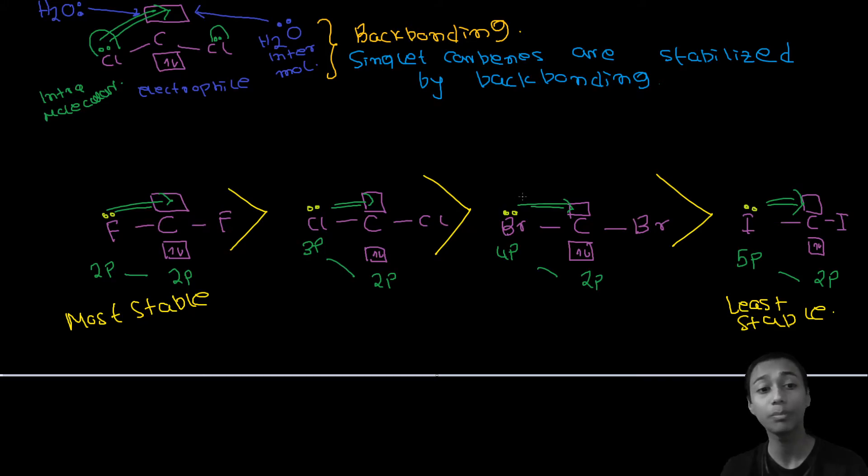Remember another thing. Triplet carbenes do not have lone pair or vacant orbitals. So they are not stabilized by backbonding. Because who gets stabilized by backbonding? Electrophiles, just like I told. Now let me clear the board and bring the next topic.